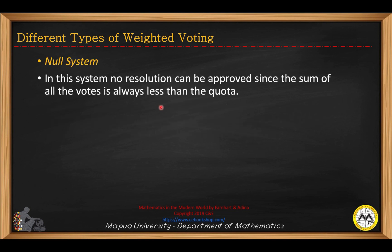In a null system, no resolution can be approved since the sum of the votes is always less than the quota. For example, you have four voters with weights 7, 5, 3, 2, and the quota is 18. So even if you get the sum of all the votes, that is always less than the quota. This is a null system.